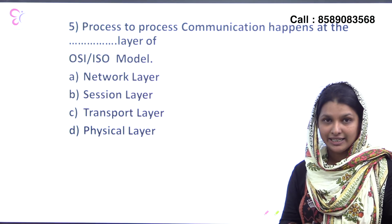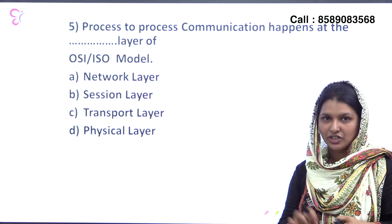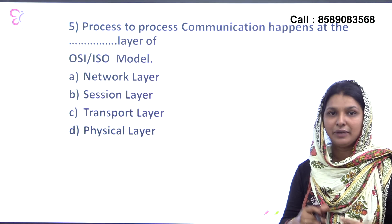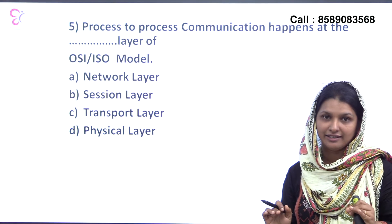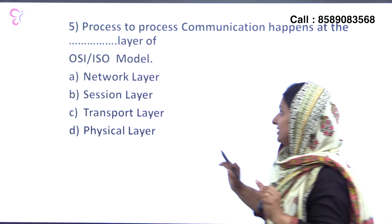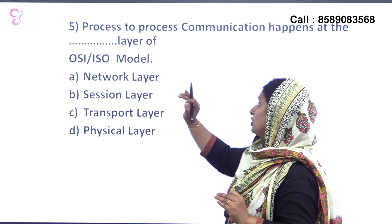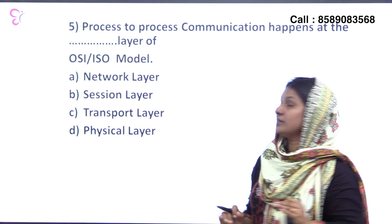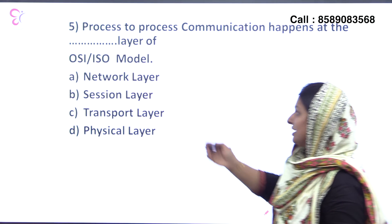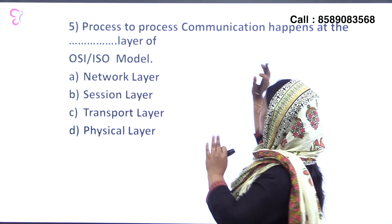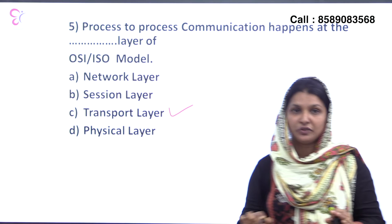The 7 layers of the OSI model are: physical layer, data link layer, network layer, transport layer, session layer, presentation layer, and application layer. Process-to-process communication happens at the transport layer.